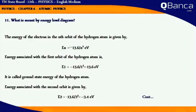E1 = -13.6/1² = -13.6 eV. It is called the ground state energy of the hydrogen atom.